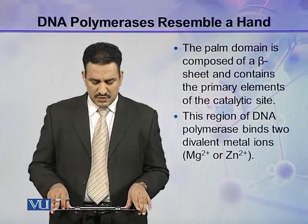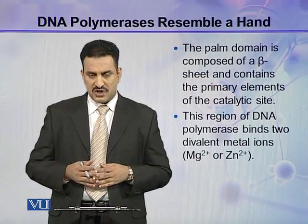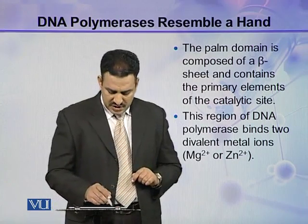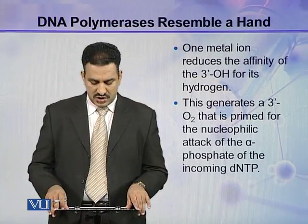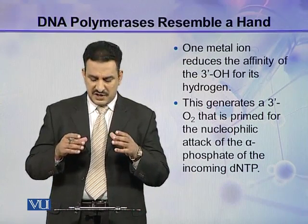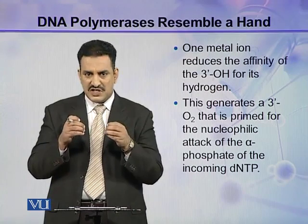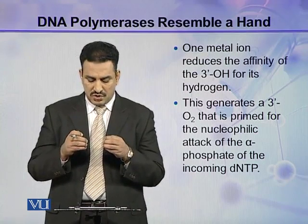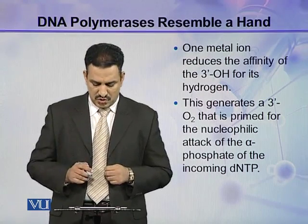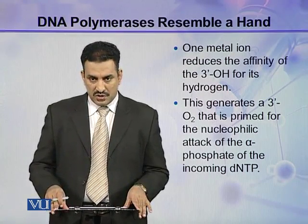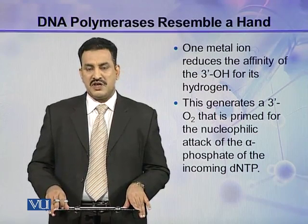This region of DNA polymerase binds two divalent metal ions — either magnesium or zinc — present in the palm domain. One metal ion reduces the affinity of the 3' hydroxyl for its hydrogen, because the 3' oxygen has to attack the alpha phosphate of the incoming nucleotide. This generates a 3' oxygen that is primed for the nucleophilic attack on the alpha phosphate of the incoming dNTP.